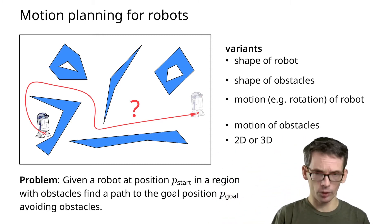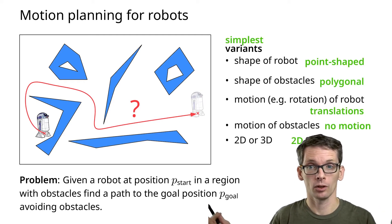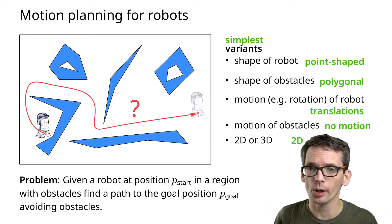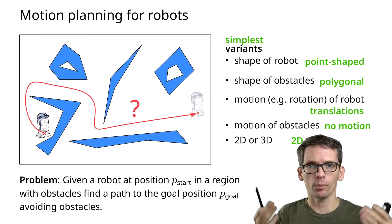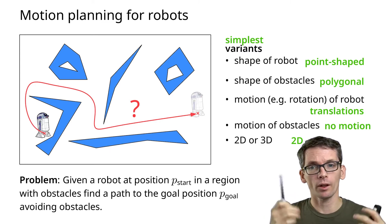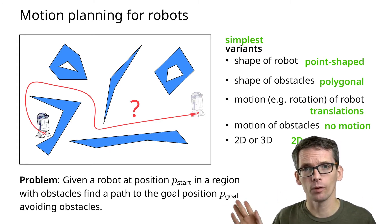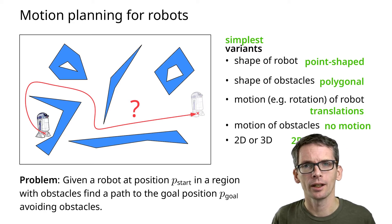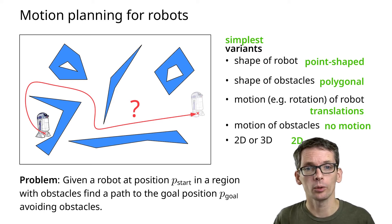The simplest variant we could think of is the following: let's say our robot is actually just a point. Obstacles are polygonal. The robot can only translate — for a point-shaped robot that doesn't really make a difference, but later if the robot has a shape then rotation also becomes relevant. Obstacles don't move — in what we're going to talk about today, obstacles will never move. And we are always looking at the 2D case.